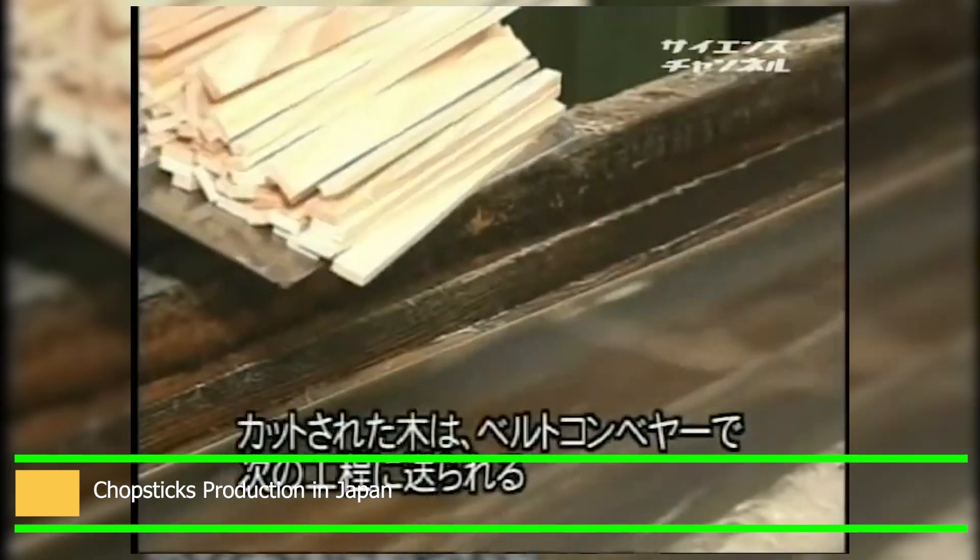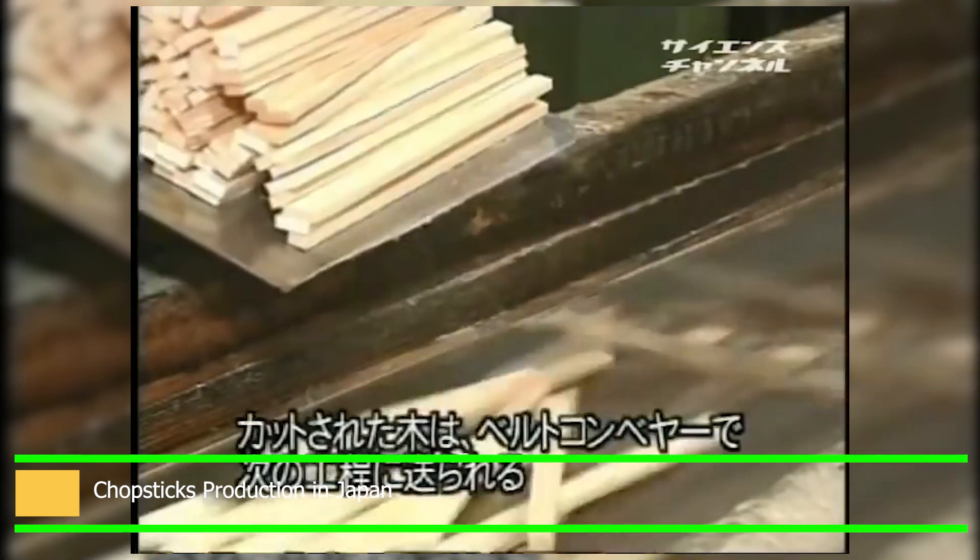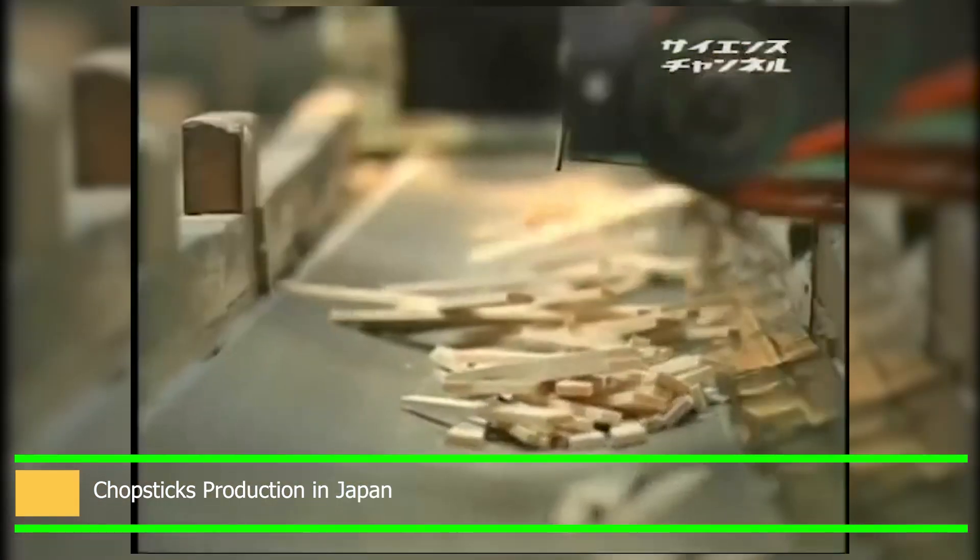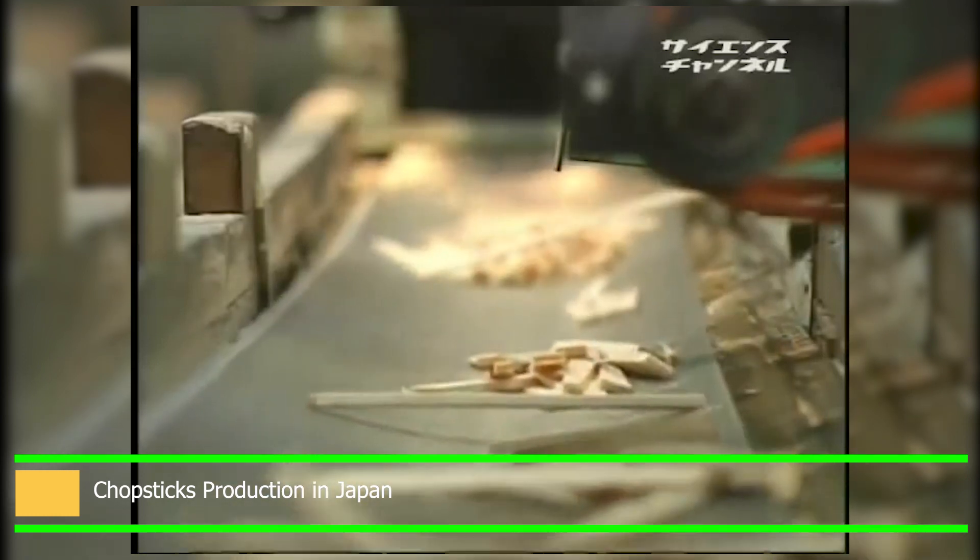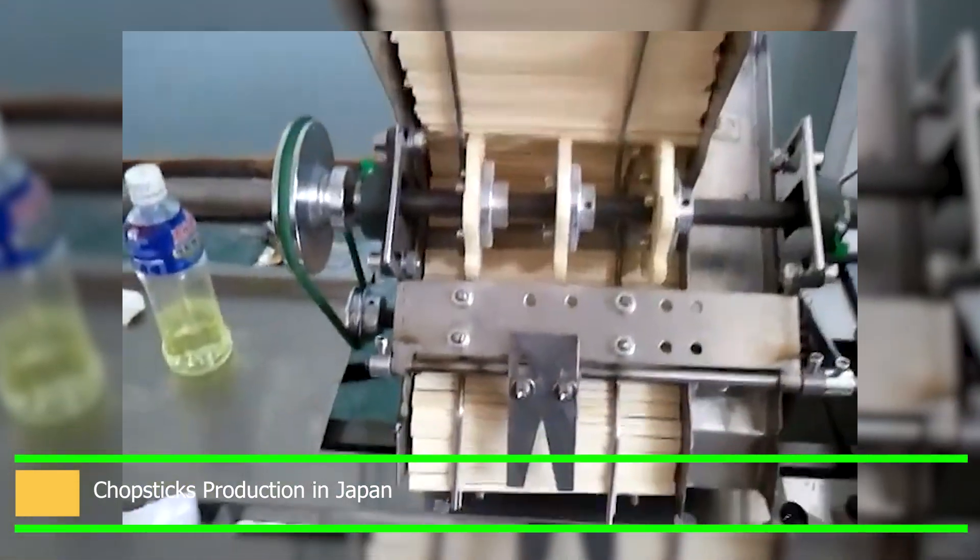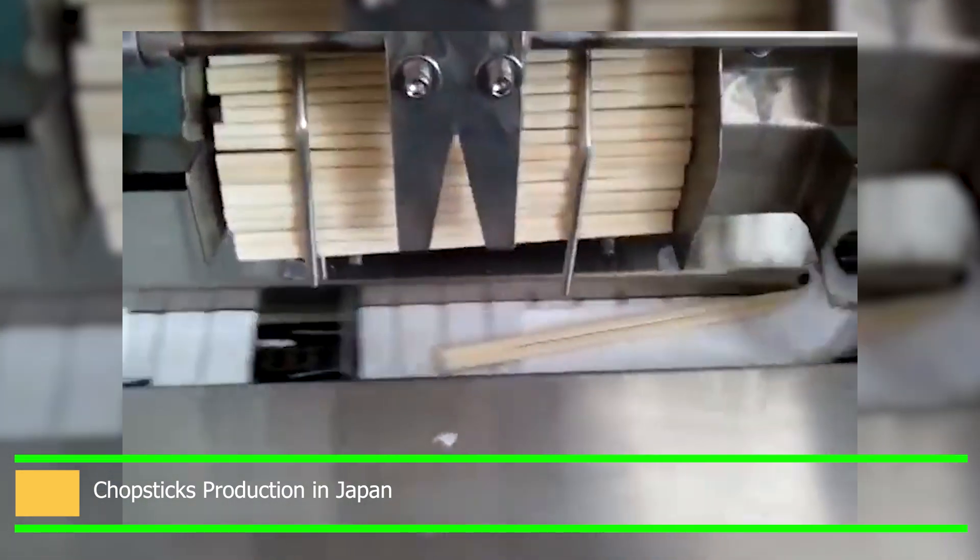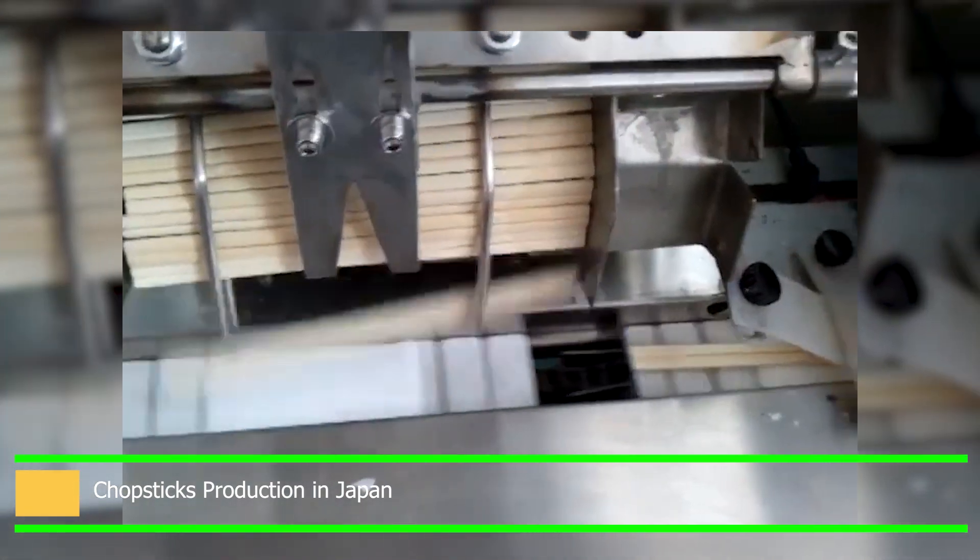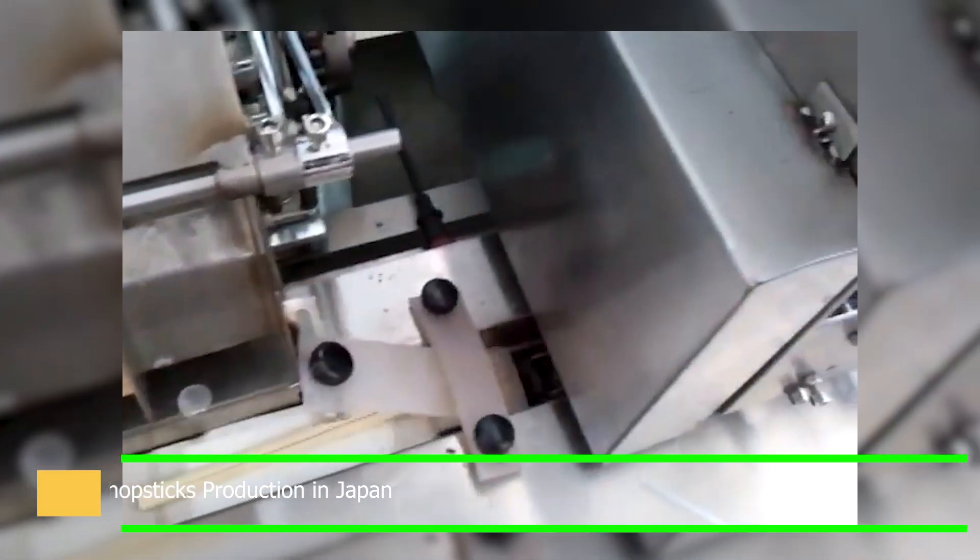When we consider the appearance of chopsticks, the vibrant patterns are undoubtedly some of the most recognizable. The most well-known are the exquisitely painted wakasa nuribashi chopsticks. This specific method of manufacture has been used in Japan since before the Edo era. These chopsticks are possibly some of the most well-known in the entire world.